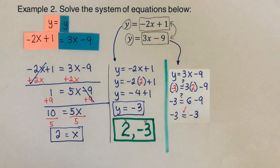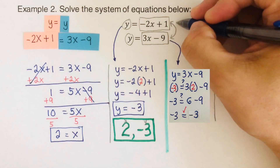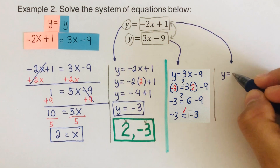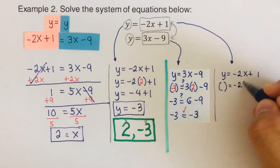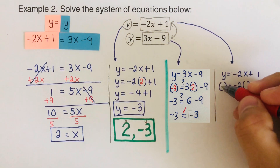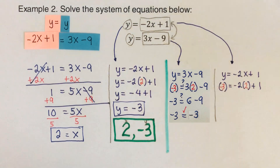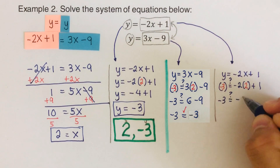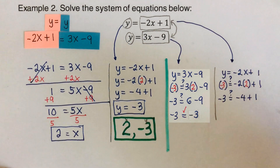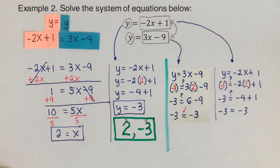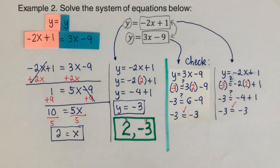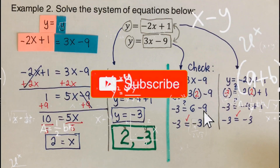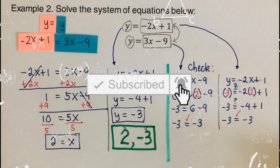Now it has to work for the first equation too. For y equals negative 2x plus 1: plugging in x equals 2 and y equals negative 3 gives negative 3 equals negative 2 times 2 plus 1, which is negative 4 plus 1, so negative 3 equals negative 3. We are right. That's step 4 — check your work. Did you get the same answer? If you found this video helpful, hit like and subscribe for more math videos. See ya!